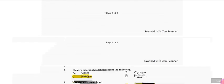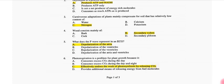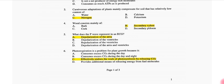Identify heteropolysaccharides. That is pectin. Glycolysis is the process that produces ATP and NADH. Carnivorous adaptation of plant mainly compensates for soil has relatively low nitrogen concentration.